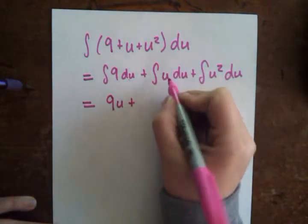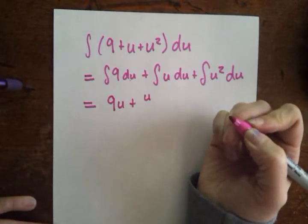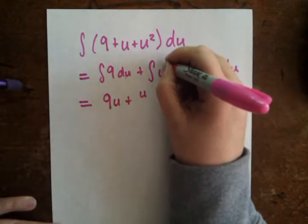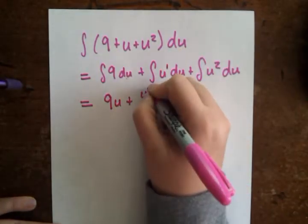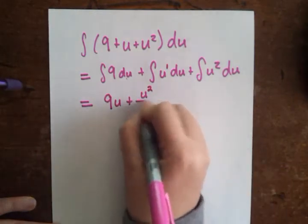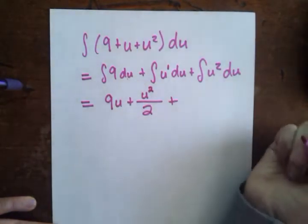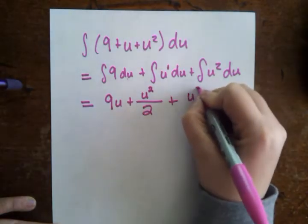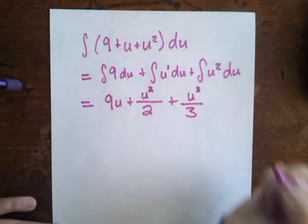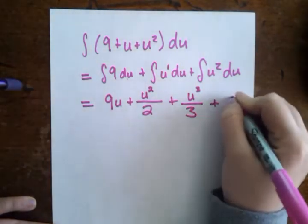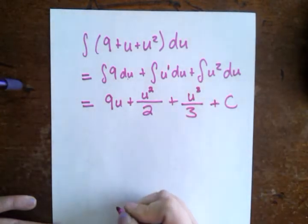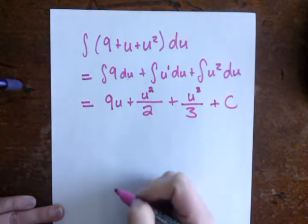The integral of u du, well, we just use our rule, technically this is u to the first power, right? So I raise that power by 1 and copy that exponent down into my denominator. And then here we raise the exponent by 1, copy that exponent into the denominator, add our integral, or our constant of integration on at the end.